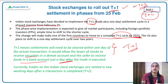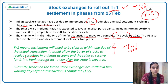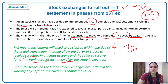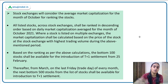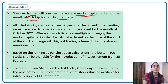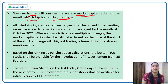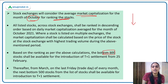It is very difficult to shift altogether to a shorter settlement time period. India's stock exchanges have agreed to accept T+1 settlement in a phased manner. The phased implementation will be based on the average market capitalization for the month of October, based on which stocks will be ranked in descending order. The bottom 100 stocks will be the first to have T+1 settlement introduced from 25th February onwards.